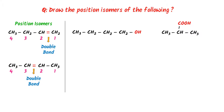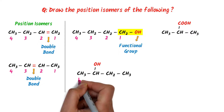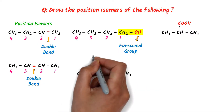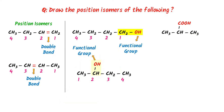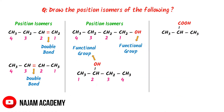Secondly, in this compound, the functional group OH is present at the first carbon. If I shift the position of this functional group from the first carbon to the second carbon, then I will get another isomer of this compound. This is the position isomer of this compound.